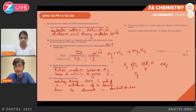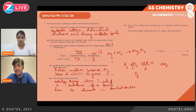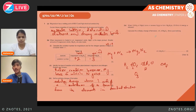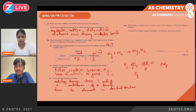When 3.645 grams of magnesium burns in excess nitrogen to form Mg₃N₂, 23.05 kJ of energy is released. We need to calculate the enthalpy change of formation of Mg₃N₂. We begin with 3.645 grams of magnesium, so we divide 3.645 by 24.3 (the atomic mass of magnesium).